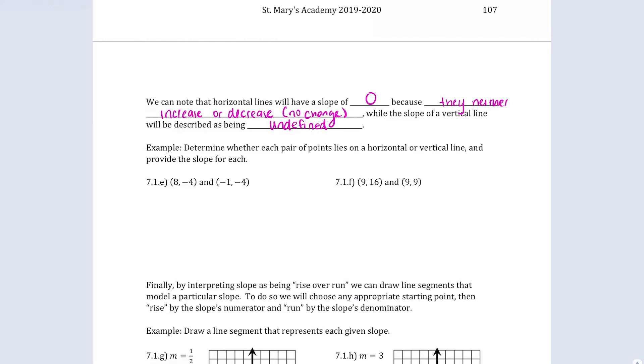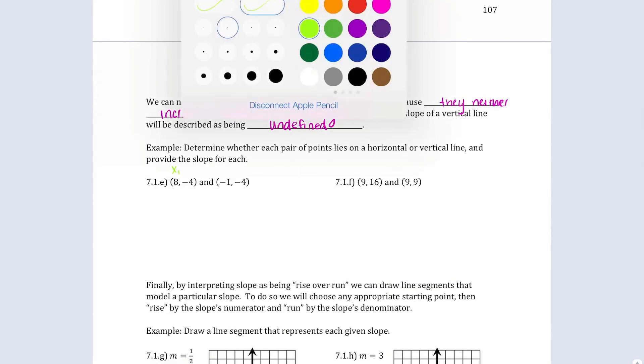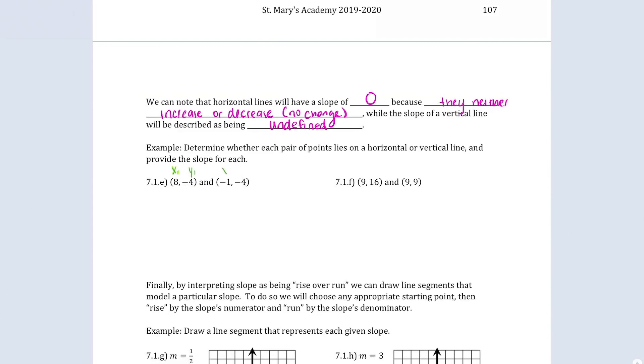So, we are going to take a look and determine whether these points lie on a horizontal or vertical line, and we're going to provide the slope for each as we do. So, we label our points. We have x1, y1, x2, y2. When we calculate our slope, we have our y2 minus our y1, and we have our x2 minus our x1. Negative 4 minus negative 4 is the same as negative 4 plus 4, which gives me a 0. And we have 0 over negative 9. 0 over any number is just going to be 0. And when we have a slope that is equal to 0, that gives us a horizontal line because there's no change.